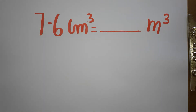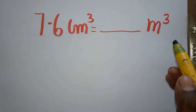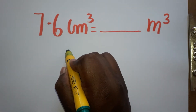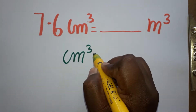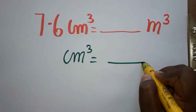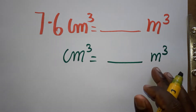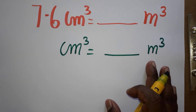Hi everyone. We are now going to learn how to convert from centimeter cube to meter cube. For example, 7.6 centimeter cube to meter cube. Before going to this, we will learn how to convert centimeter cube to meter cube first, then we will solve 7.6 centimeter cube to meter cube.